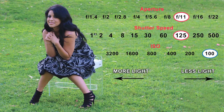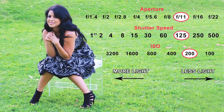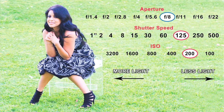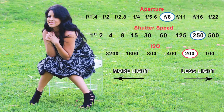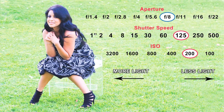Let's put ISO back to 200 and change aperture to f8. The image is too bright. But let's pretend we want to use f8 as our aperture. To bring the image to normal exposure, we have two options: we can change either shutter speed or ISO. We would have to change shutter speed to 1/250th of a second or change ISO to 100.